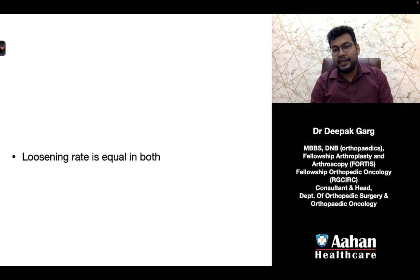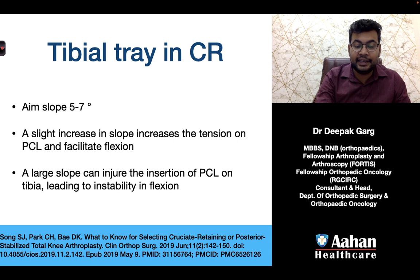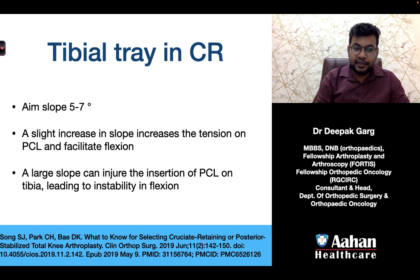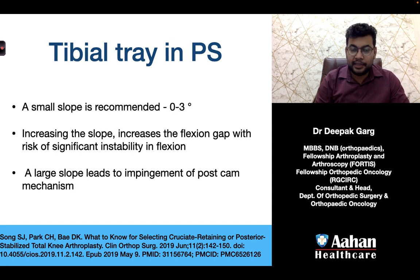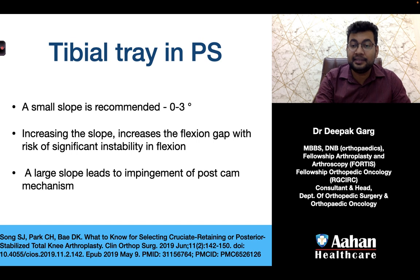The loosening rate is equal in both CR and PS. For the tibial tray in CR cases, the recommended slope is 5 to 7 degrees — a slight increase in slope increases tension on the PCL and facilitates flexion, but too much slope risks PCL injury and instability in flexion. For the PS tibial tray, the recommended slope is lesser at 0 to 3 degrees; increasing the slope increases the flexion gap with risk of significant instability, and excessive slope can lead to impingement of the post-cam mechanism and tibial post fracture.